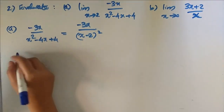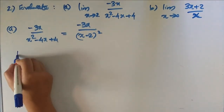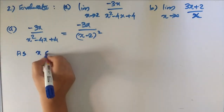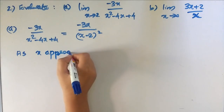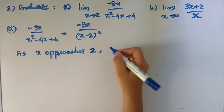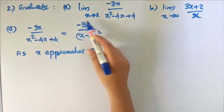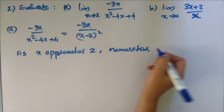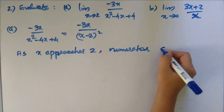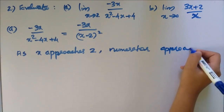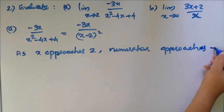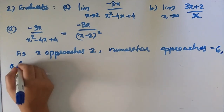As x approaches 2, the numerator is minus 3 times 2, which equals minus 6. That is a negative number.